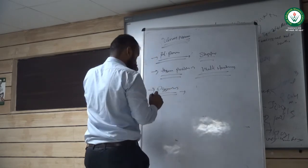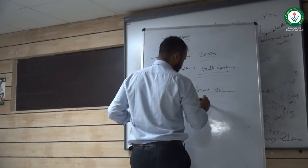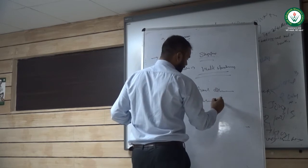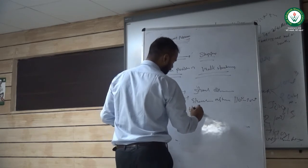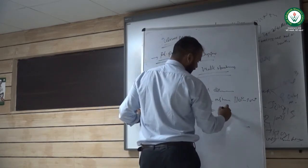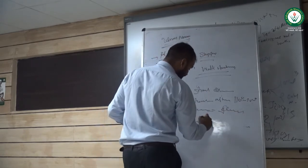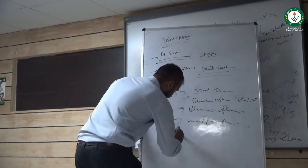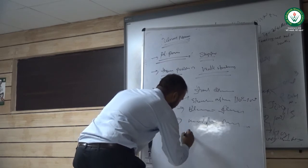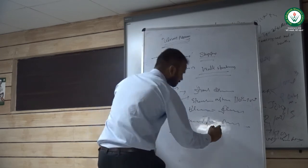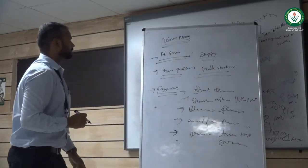Procedure: shoulder depression, shoulder abduction 100 to 110 degrees, elbow flexion, wrist and hand finger extension, and elbow again towards the ear. This is the procedure of Ulnar nerve mobilization.